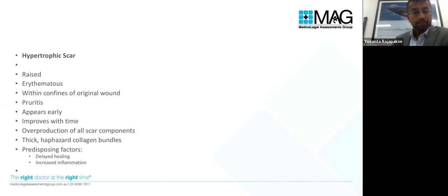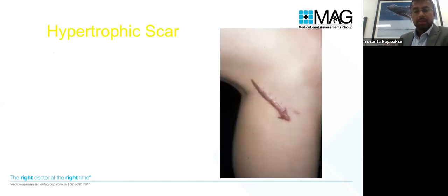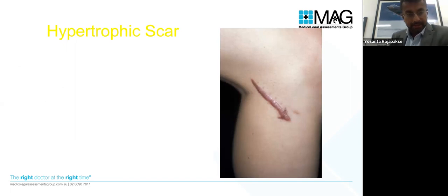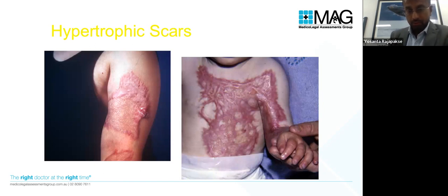Predisposing factors we try to minimize with surgical technique include delayed healing, wound infection, and increased inflammation. A hypertrophic scar has not extended beyond its margins but is thickened, raised, and hyperpigmented. Burn scars can result in hypertrophic scarring if not adequately treated — over sensitive and functional areas like the axilla this can be disastrous, resulting in a contracture.